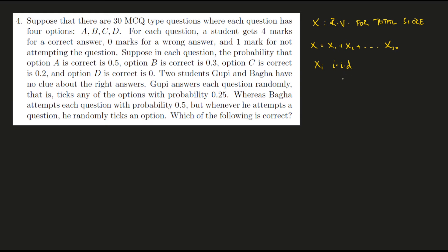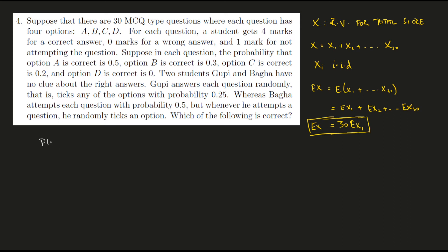This holds true for both students. The expected value of X — that is, the expected value of the total score — is the expected value of the sum of all Xi's. This can be broken down into individual expected values, and since all Xi's are identically distributed random variables, it's just 30 times the expected value of any one of them, say E[X1]. So the total expected score for both students is 30 times the expected value of the first question.